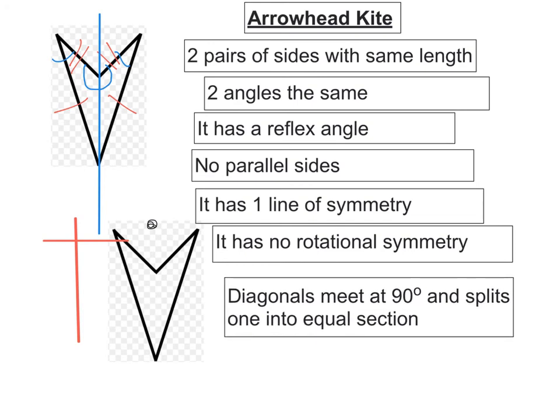In terms of its diagonals, if you remember, they meet at 90 degrees and split one into equal sections. So this one here, actually the diagonals meet outside of the kite, but I still have 90 degrees. And this one, this diagonal is split into equal sections.